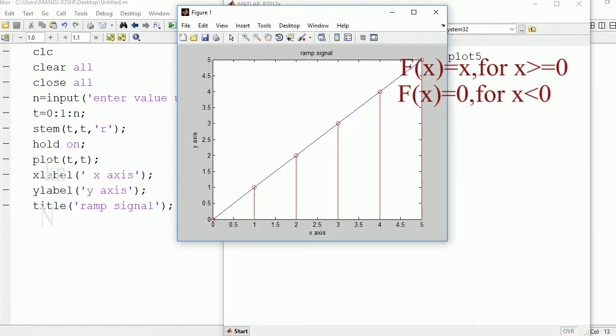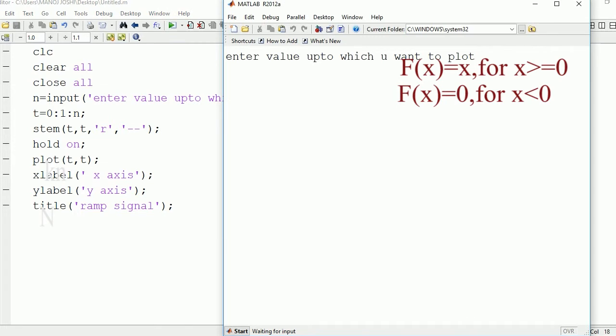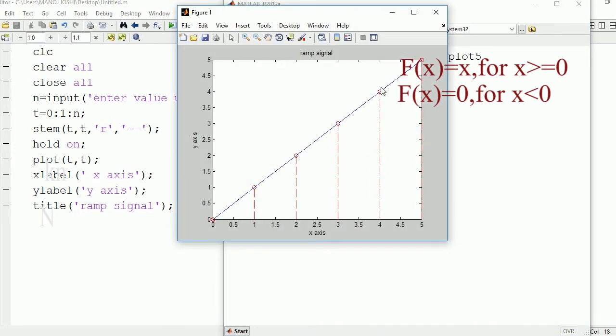Now also you can change the type of this line. Here I'm changing it to dash form. So run - five. Here you can see the line changed to dotted form.